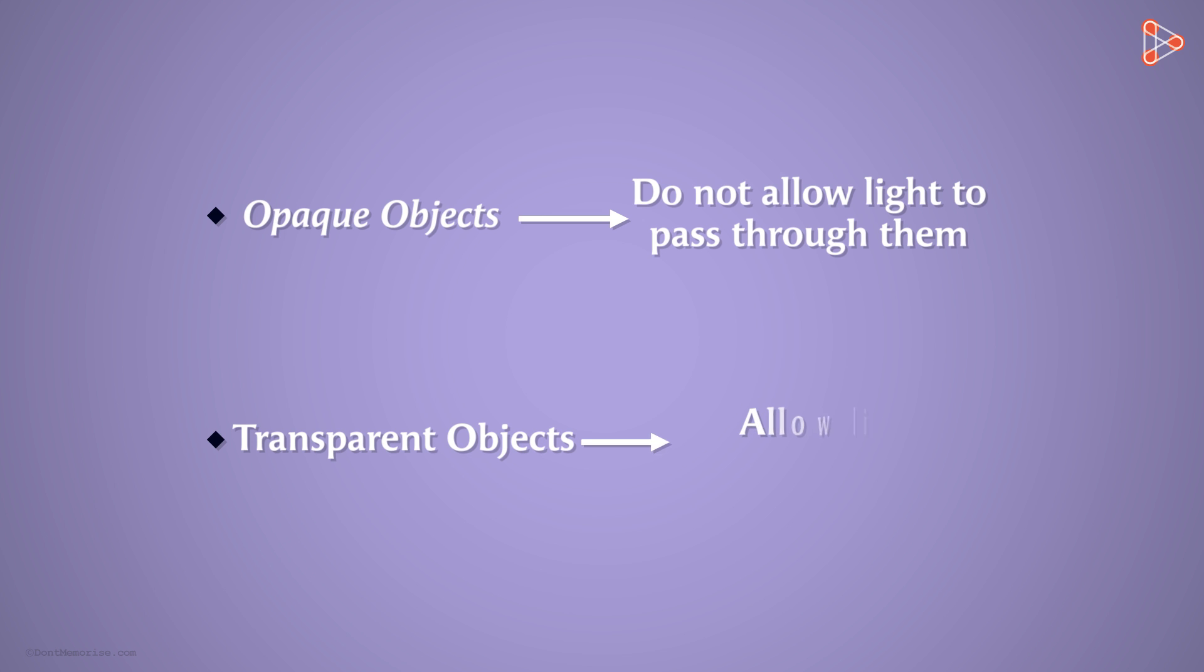Second, transparent objects allow light to pass through them and we can see through them clearly.